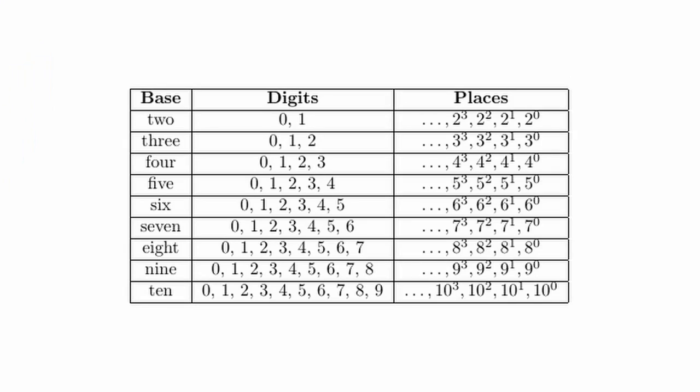So if you think about base two, like we mentioned, the binary, we have digits zero, one, once you get past one it resets and all of our places are powers of two.